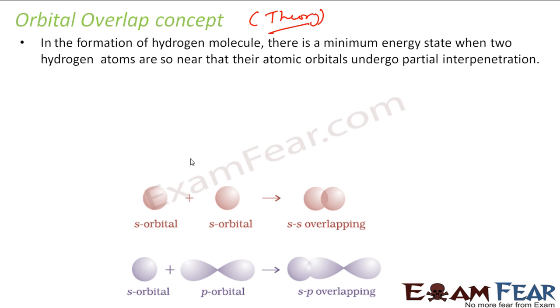It says that in the formation of hydrogen molecules, there is a minimum energy state at 74 picometer distance where hydrogen atoms undergo partial interpenetration. That means the orbitals overlapped for the two hydrogen atoms. For example, if you see, s-s orbitals overlap to form s-s overlapping. There is a place where there is overlap.